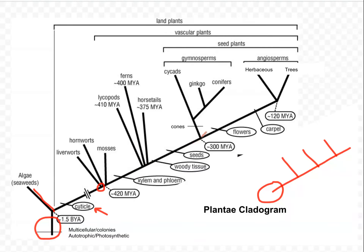This cladogram does have a few dates listed. MYA stands for million years ago; BYA stands for billion years ago. At about 300 million years ago, based on fossil evidence, the gymnosperms evolved. I know those are gymnosperms because some traits are listed up here, and this little bracket indicates that cycads, ginkgos, and conifers are all gymnosperms. Those gymnosperms branched off and are cone-bearing plants — you see cones as a characteristic, so everything on this clad would have cones.